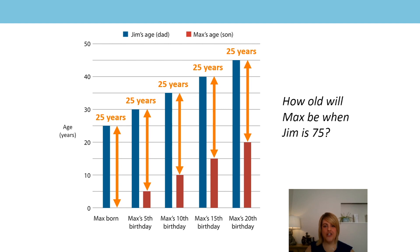Well done. When Jim is 75, Max will be 50. What do you notice each time when we change Jim's age — what happened to Max's age? That's right. When Jim's age changed, Max's age changed by the same amount. This meant the difference always stays the same. Well done.